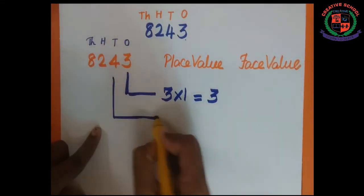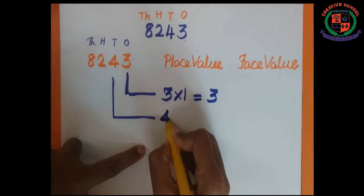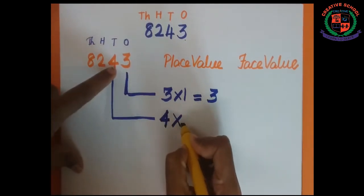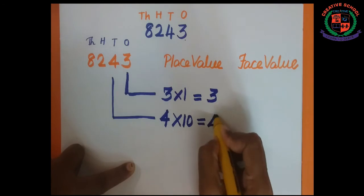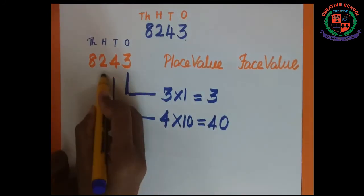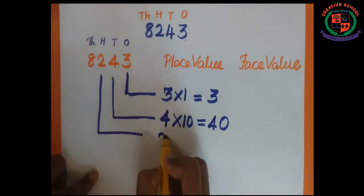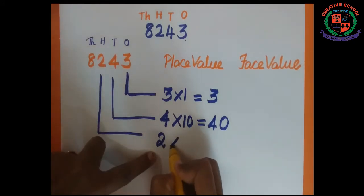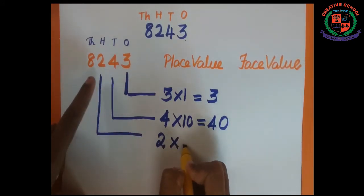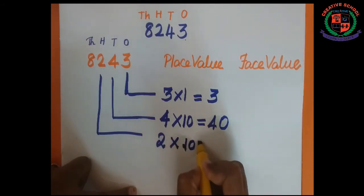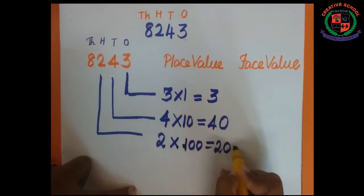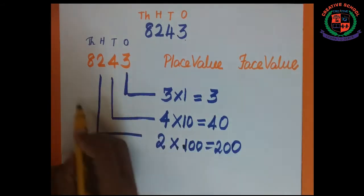4 is in tens place, so we have to write here 4 multiplied by 10, because it is in tens place. 4 tens are 40. 2 is in hundreds place. We have to write 2 multiplied by 100, because it is in hundreds place. So 2 into 100 is equal to 200.